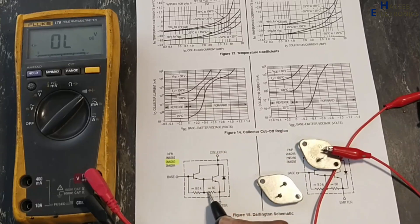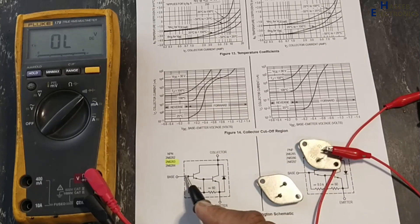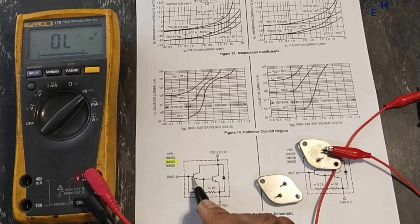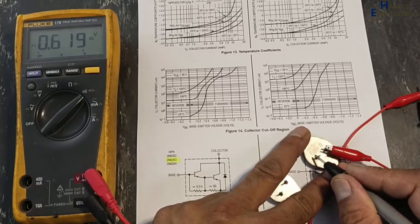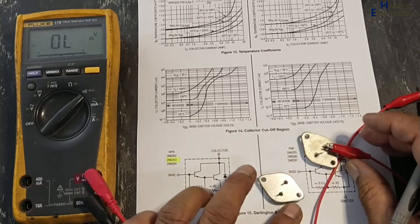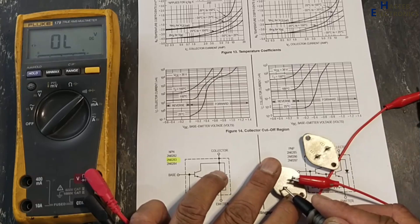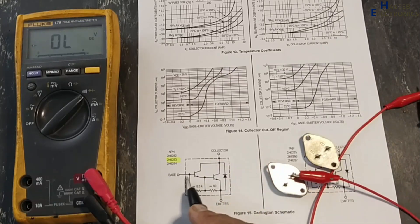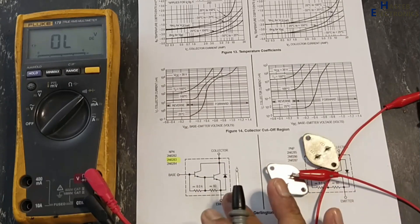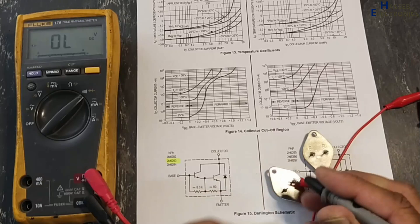That means maybe this junction is damaged from the first transistor, driver transistor, or maybe this resistor. Here it is giving good reading. Here it is not giving reading. When there is no base current, this transistor will not work.